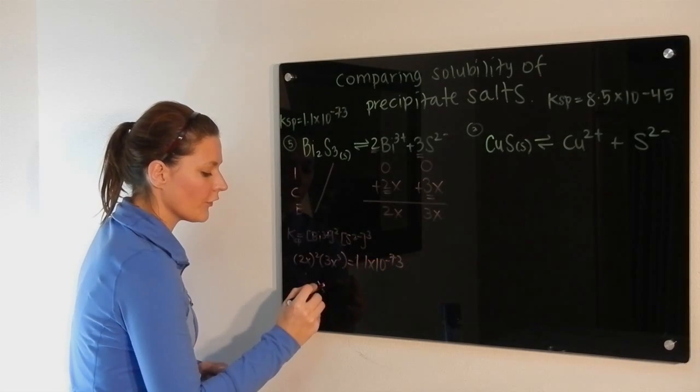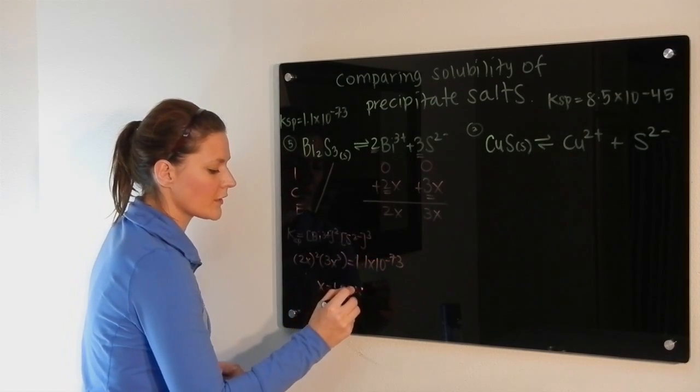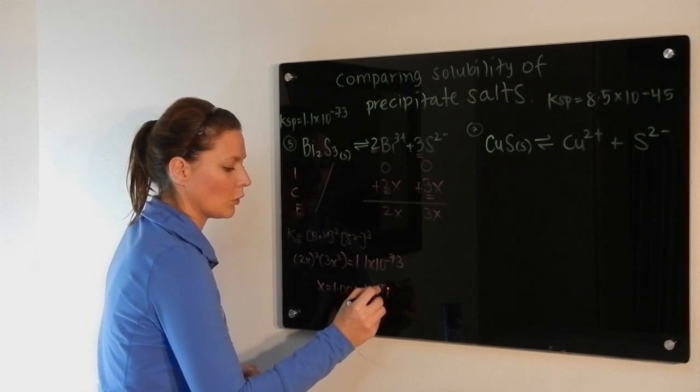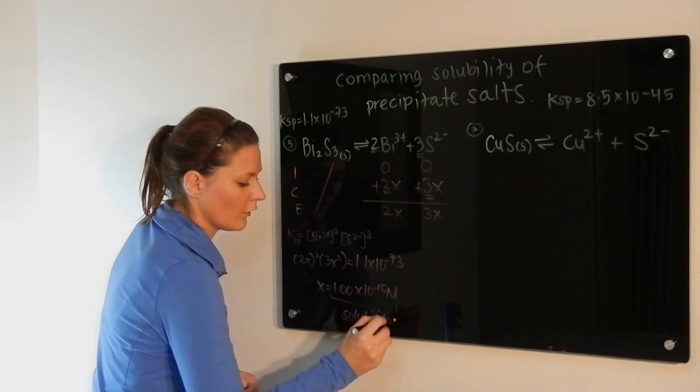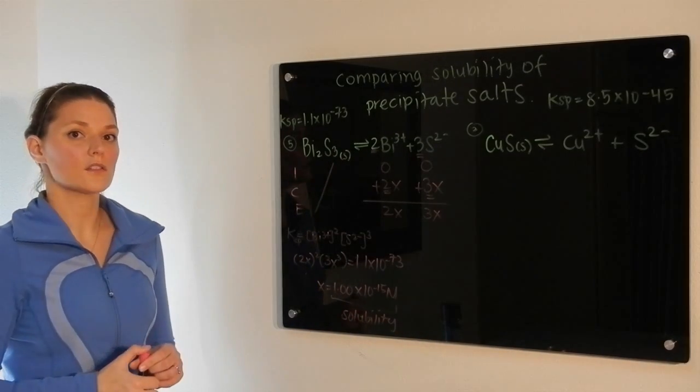When you solve for X, you get 1.00 times 10 to the minus 15 molar. So this here is the solubility for our bismuth sulfide salt.